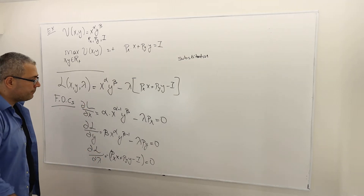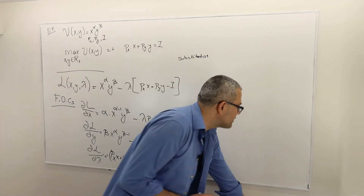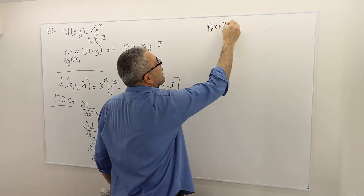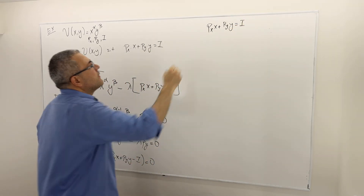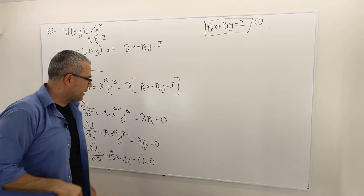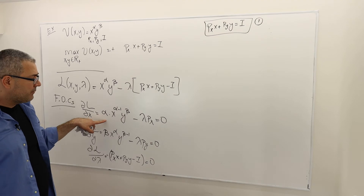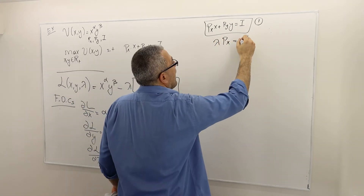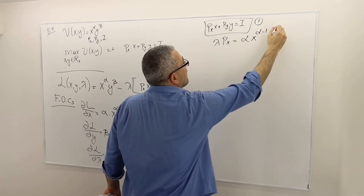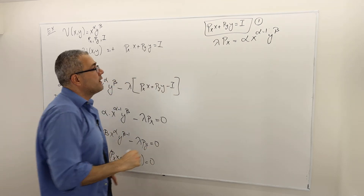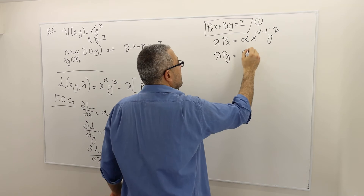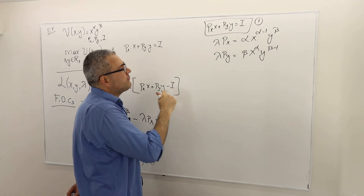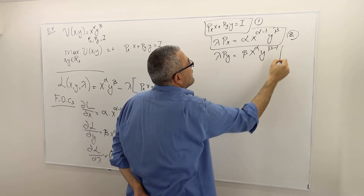I'm going to solve these three equations. Starting with the third one: px*x + py*y = income — this is just the budget constraint, and I'll call it equation 1. Rearranging equation 1 (the first FOC): lambda*px = alpha * x^(alpha-1) * y^beta — call this equation 2. And from the second FOC: lambda*py = beta * x^alpha * y^(beta-1) — call this equation 3.